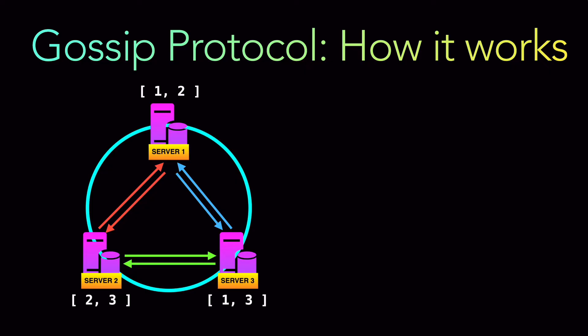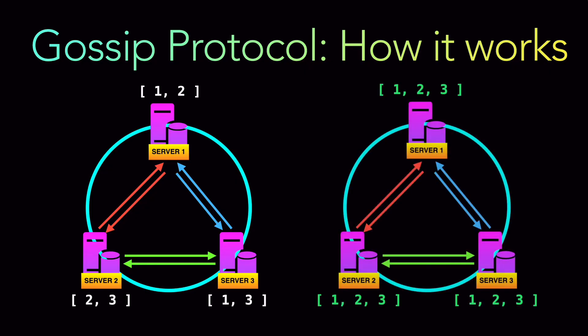And what will be the outcome of this mechanism? Each server will now hold every piece of information in the entire distributed network. Server one now has data one, two, and three — it got three from server two and server three. Server two did not have one, so it received it from server one and server three. And server three did not have two, so it got it from server one and server two. Basically, the information is being shared with all other nodes at every point in time.